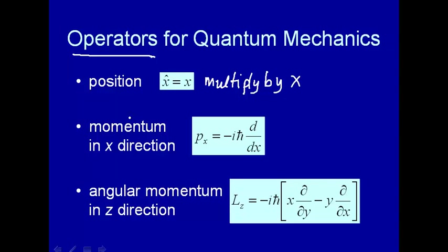Now for particles or systems that are undergoing motion — like a particle that's moving with some velocity — these operators in quantum mechanics are much different. For instance, here is the momentum operator, which in classical mechanics was mass times velocity. When we translate that into quantum mechanics, it's this strange thing: